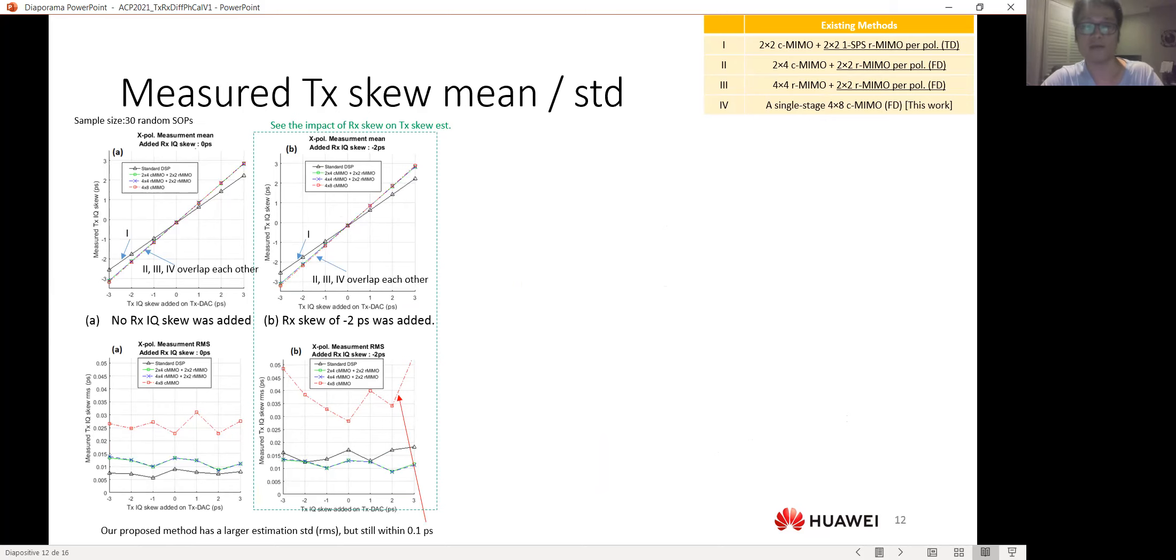And we see that our methods, which is red in color, overlap with other currently existing methods. And also, it doesn't seem to be affected by the receiver skew. However, our method is suffering from a larger estimation variance, but still the standard deviation is within 0.1 picoseconds.